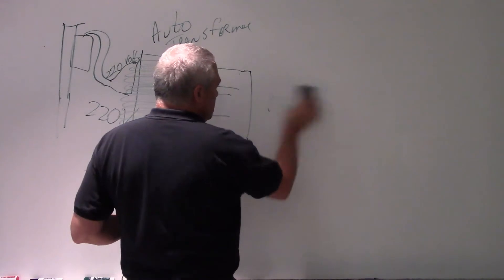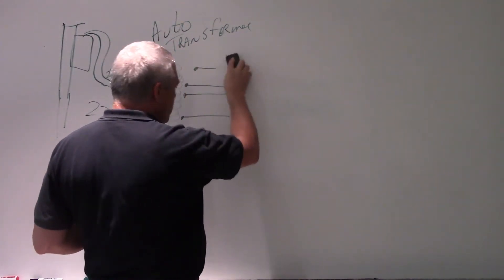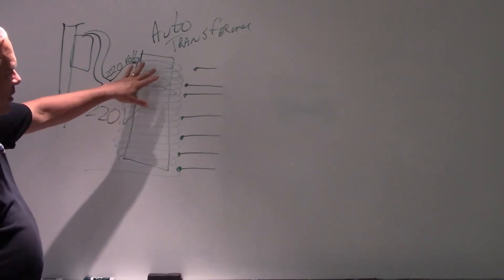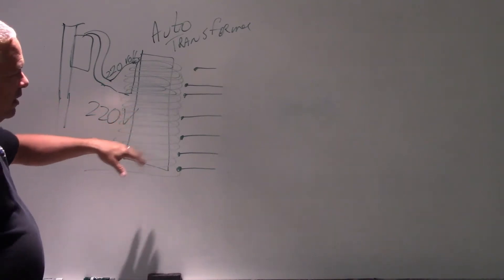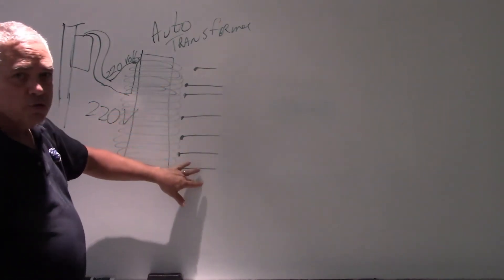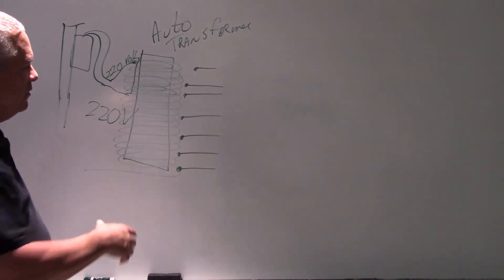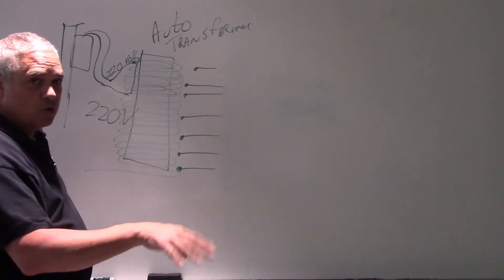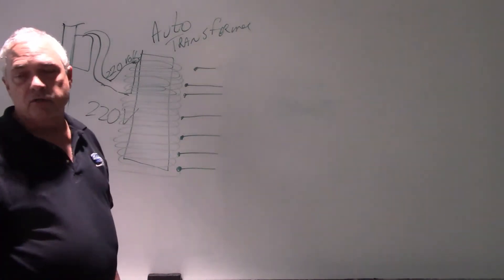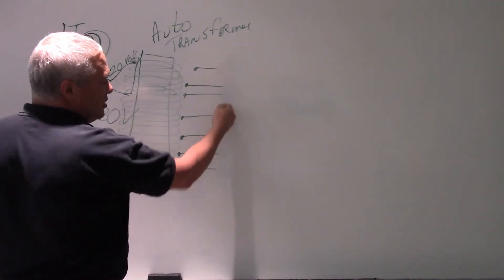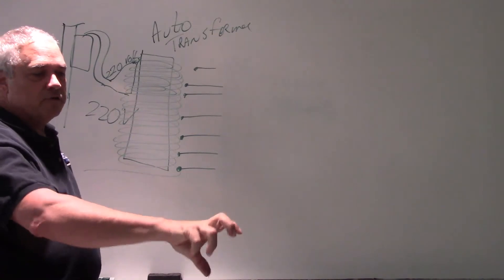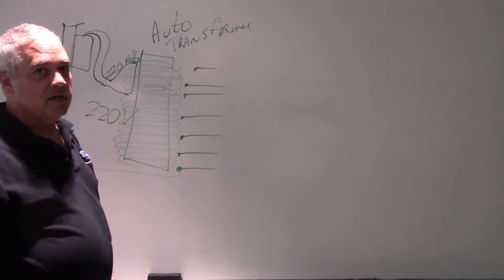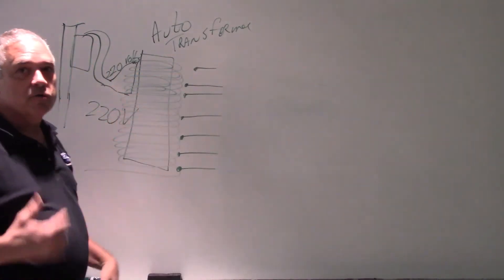So we've got electricity coming in, and we've run it through the auto transformer, selecting how much of it we're going to use. This is basically the function of your kVp selection whenever you're selecting kilovoltage on the control panel. You might hear the box in the corner clicking — those are relays selecting which taps to use. As you change from 60 to 70 to 90 kVp, you'll hear those relays clicking, adjusting the auto transformer coils.